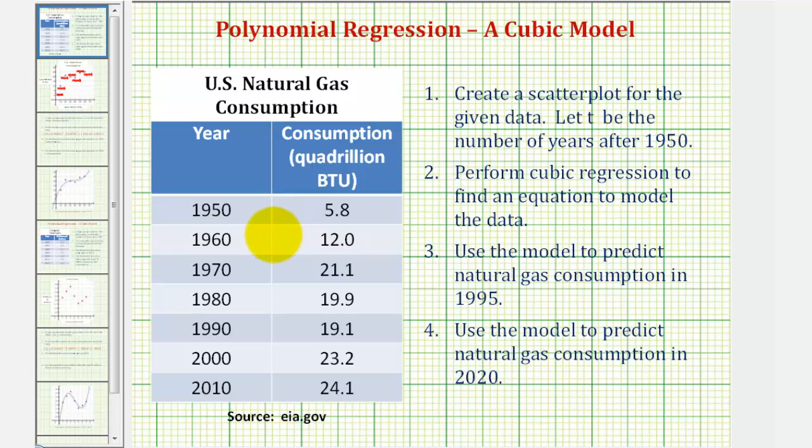Before we make our scatter plot though, it's important to recognize that T is the number of years after 1950, so we're not going to use these values for what we normally think of as X values, but in this case they're actually T values.